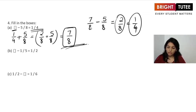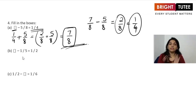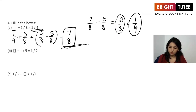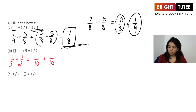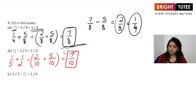Let's try the next one: something take away 1/5 equals 1/2. We add the two given numbers: 1/5 plus 1/2. Converting to like fractions with LCM 10, we get 2/10 plus 5/10. The answer is 7/10. This is the missing number.